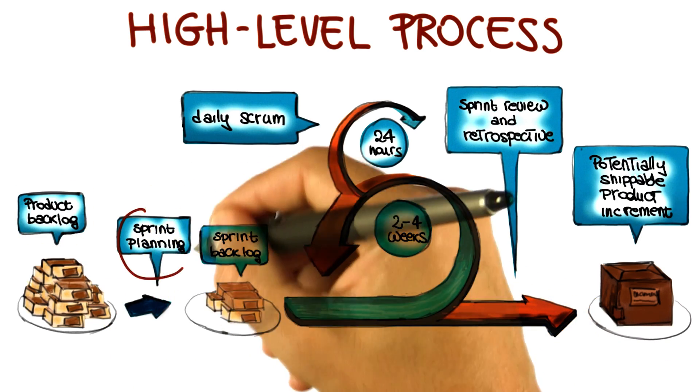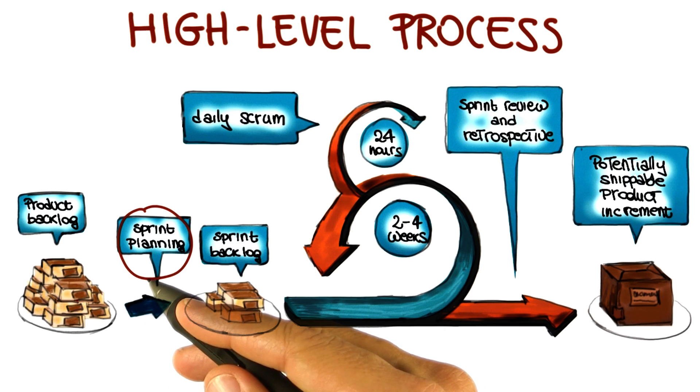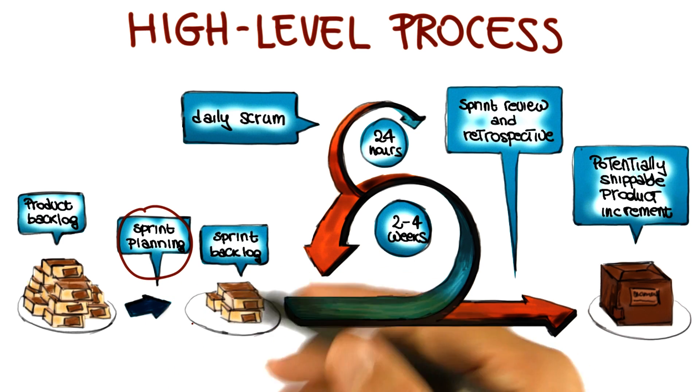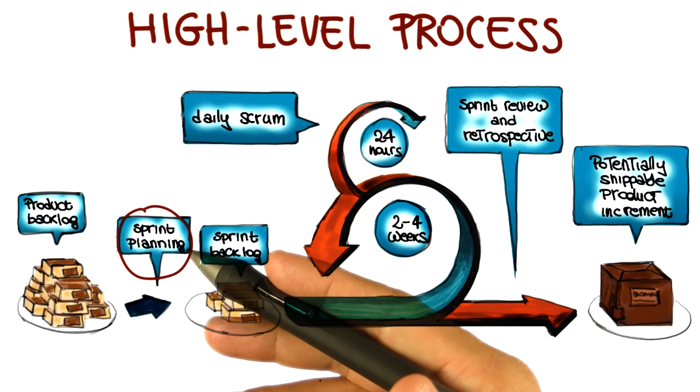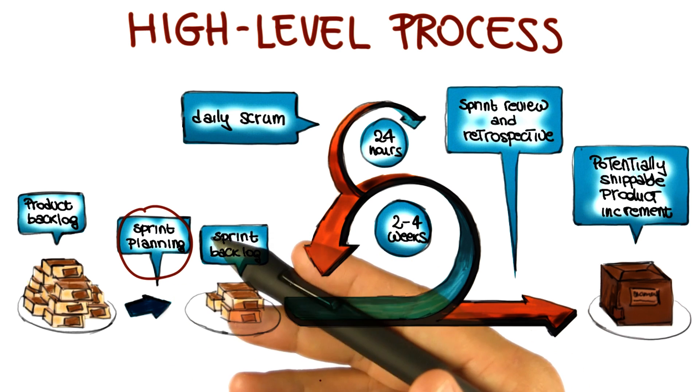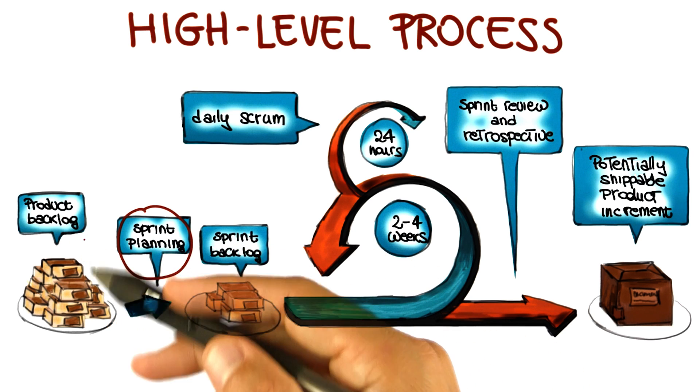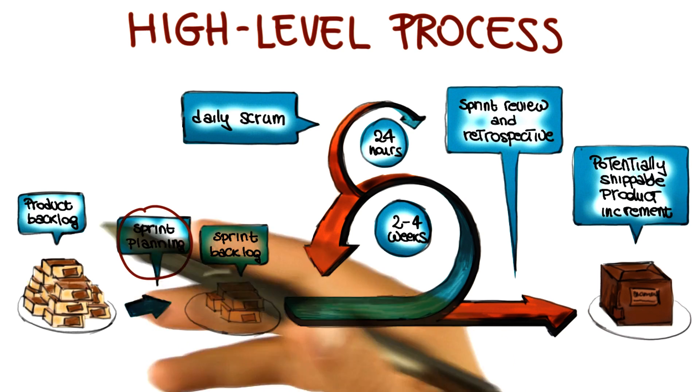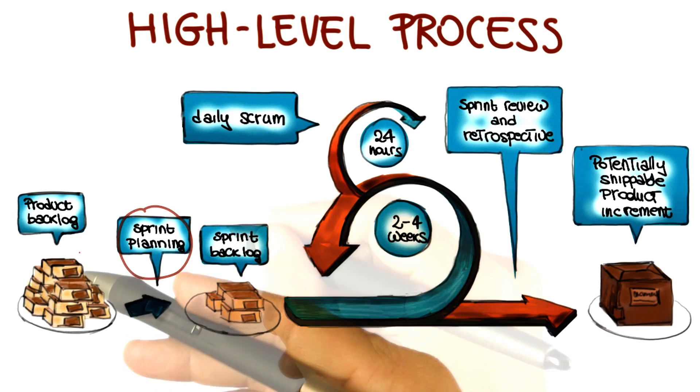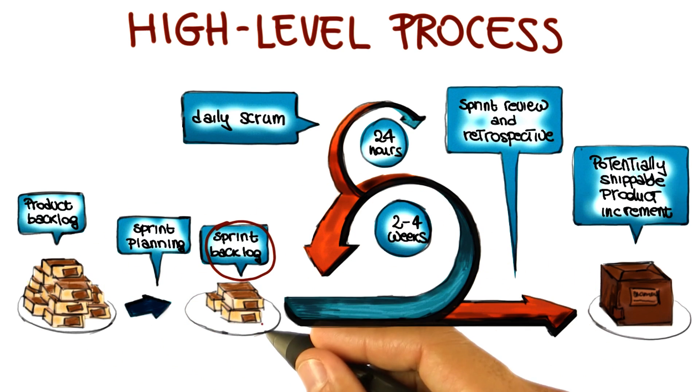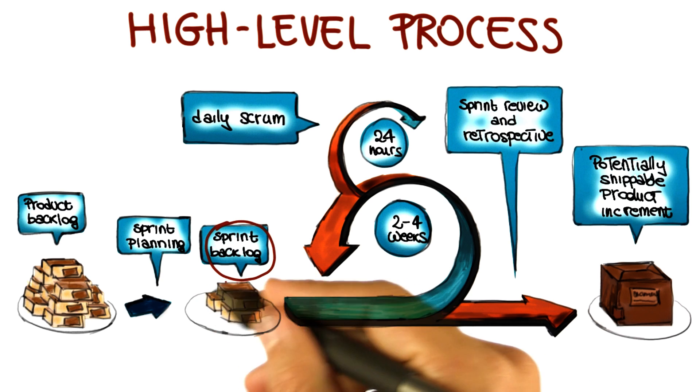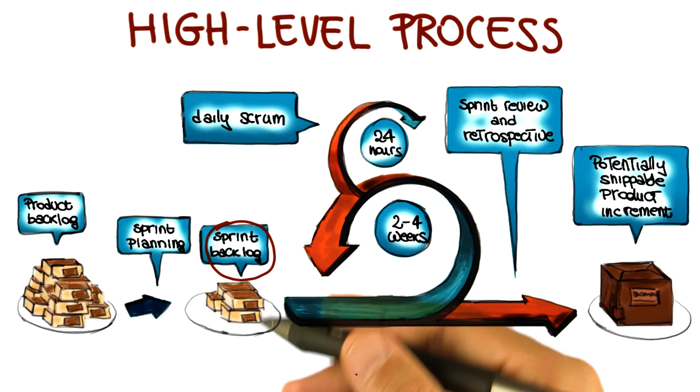In the sprint planning, what happens is that the next increment, or the next sprint, is defined. So basically, the backlog items of interest are selected based on the characteristics we just mentioned: value, risk, priority, and necessity. And the items are converted into tasks and estimated. So the result is the sprint backlog, which is the set of backlog items that will be completed during the next sprint.